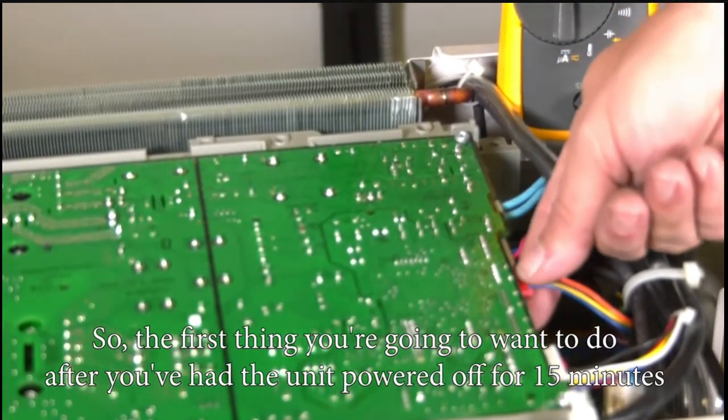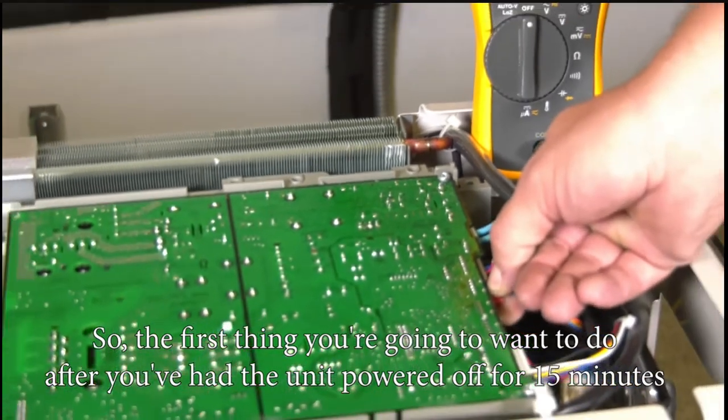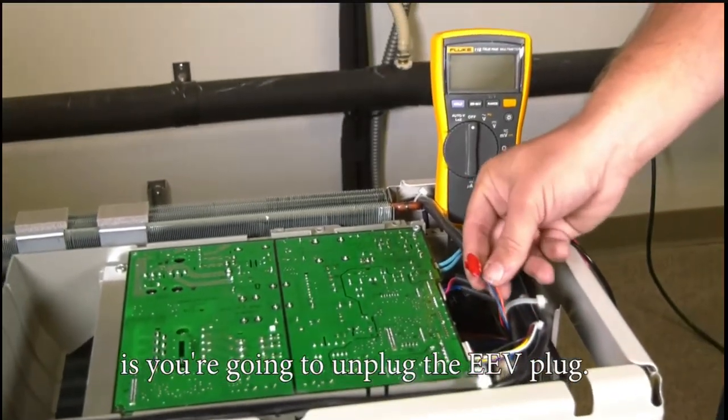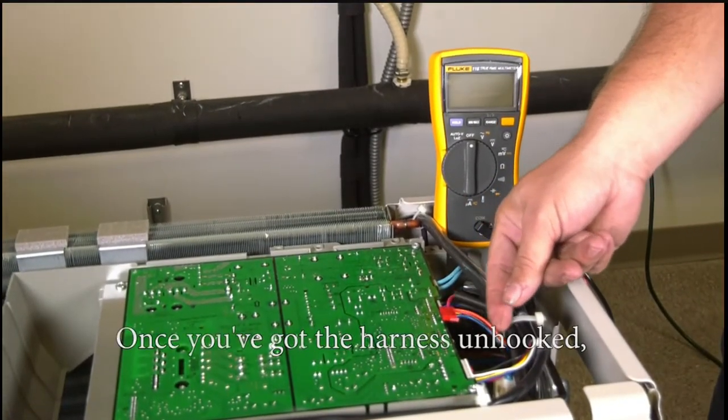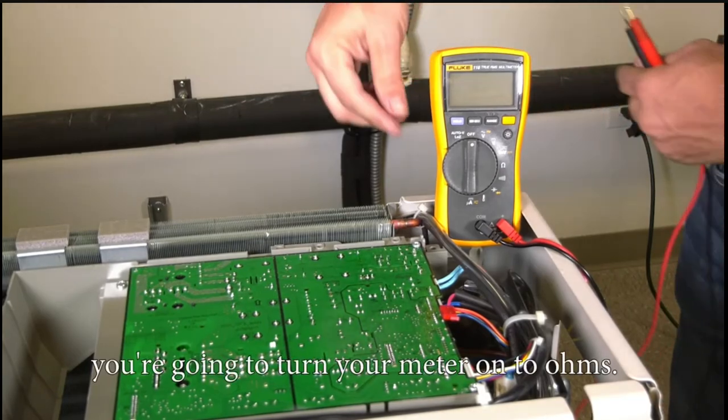After you've had the unit powered off for 15 minutes, you're going to unplug the EEV plug. Once you've got the harness unhooked, turn your meter on to ohms.